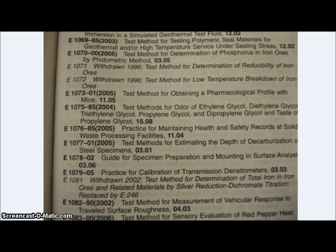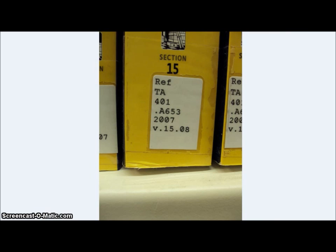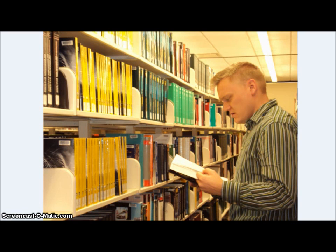The first volume also has the standards listed in alphanumerical order by standard number. So if we were looking for E1075-85, we would know to go to volume 15.08 to find that standard. On the shelf, we would find that volume and read or photocopy our standard.